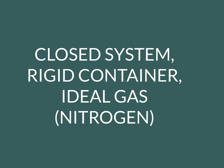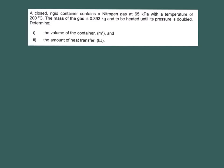So let's have a look. In this question we have a closed rigid container contains nitrogen gas at 65 kilopascal with a temperature of 200 degrees C. So this is the initial state and the mass given of the gas is 0.393 kilogram and it is to be heated until its pressure is doubled. Right, so you need to determine the volume of the rigid container as well as the amount of heat transfer.